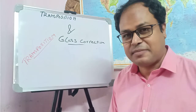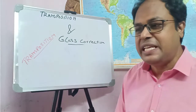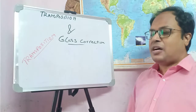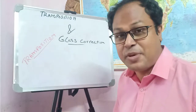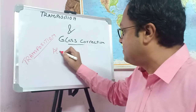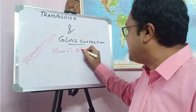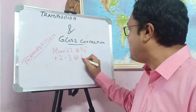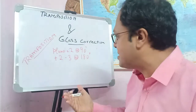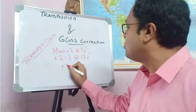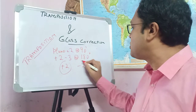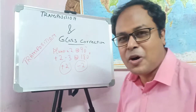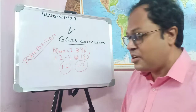To understand how astigmatism is corrected by glasses, we need to have the concept of transposition and how transposition is done. Prescriptions can be of many different types: it could be plano plus 2 at 90 degrees, or plus 2 minus 3 at 180 degrees, or just plus 2 or minus 2. What do these different prescriptions tell us about the patient's refractive error?